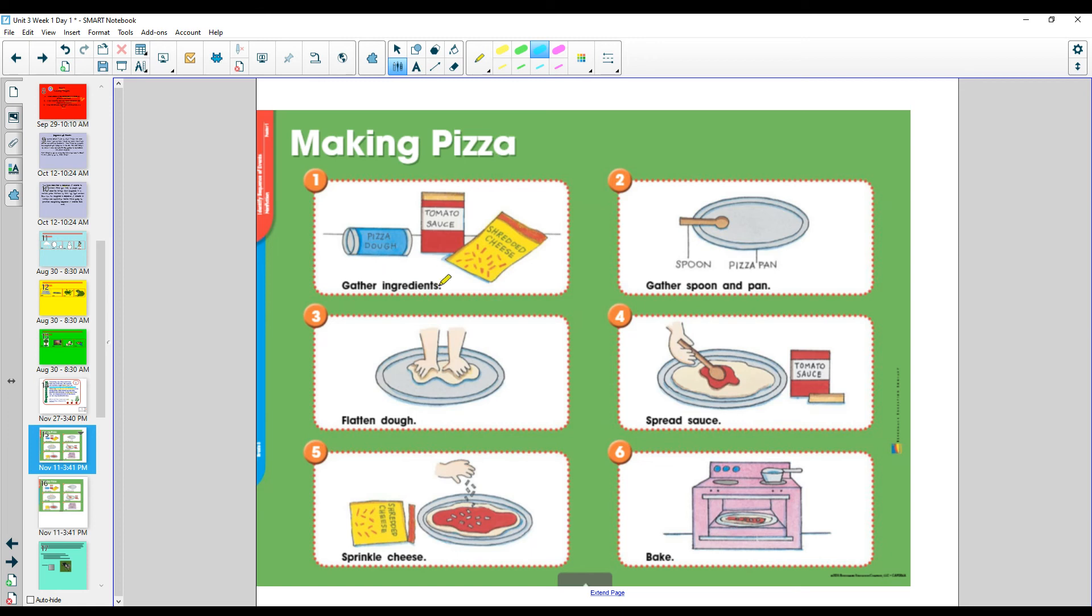Here you're gathering the ingredients. You gather your spoon and pan, you flatten the dough, you spread the sauce, you sprinkle the cheese, and then you bake. Alright, so all of those things are going to help us be successful. So, we should be able to sequence all sorts of things.